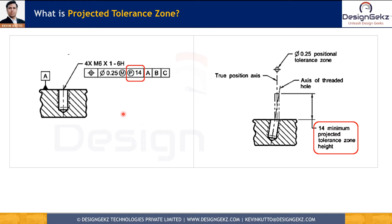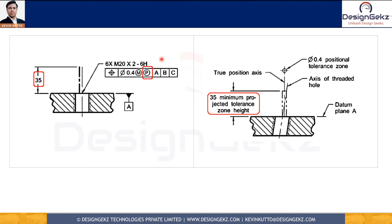There is another way of showing this as well. The difference here is that no value is shown after P, but we are still using the projected tolerance zone. The height of the upper part or the height of the tolerance zone is shown in the engineering drawing of the lower part using a phantom line, with a dimension of 35 mm. This indicates that the tolerance zone is applied at a 35 mm height. Both ways — specifying the height after P or in the drawing itself — are valid.